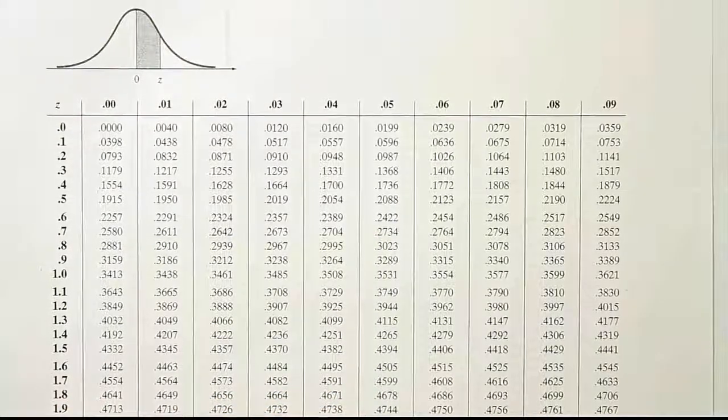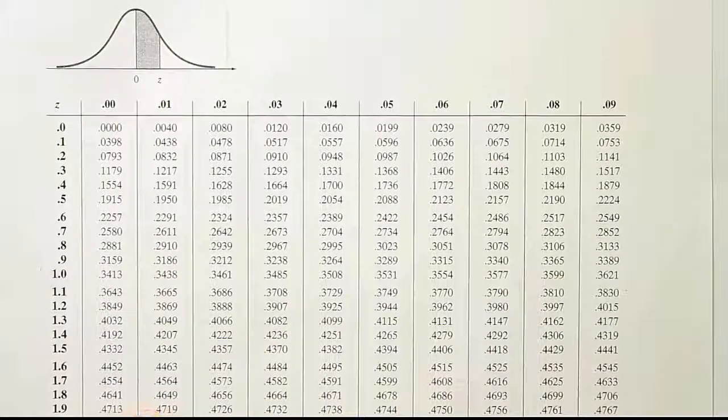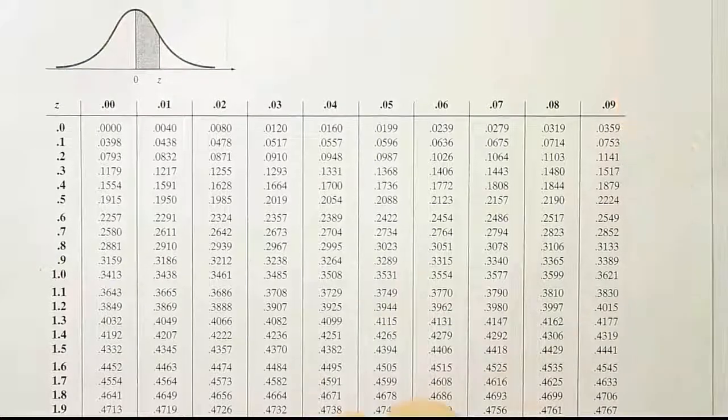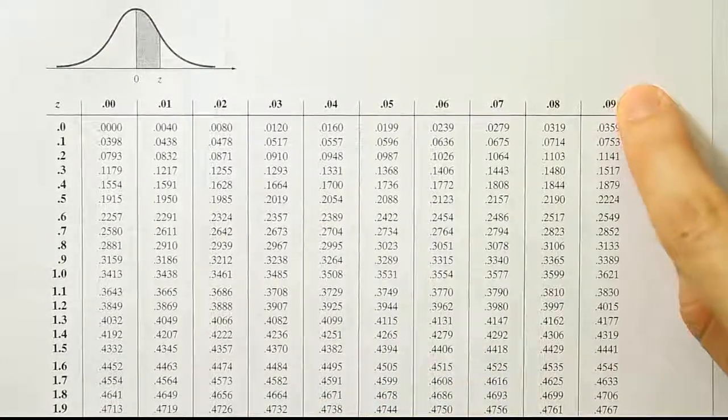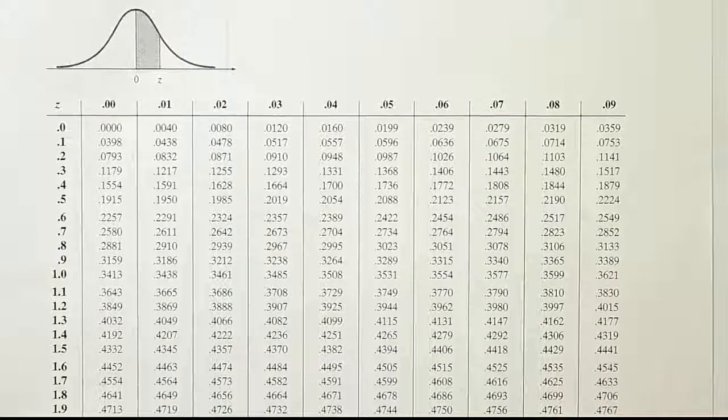Okay, so you can see at the very bottom of the table here on the screen we have 1.9 the first two digits. And then we go all the way over until we find the 9 here. So 1.99 and we end up looking down to see the answer is .4767.